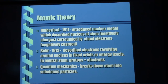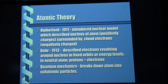Bohr also figured out that in a neutral atom — as long as it's not an isotope — the number of protons always equals the number of electrons. So if you've got 74 protons, you must have 74 electrons. I refer to that as the atom's ground state — that's what the atom wants to be. It wants to be nice and neutral and happy.